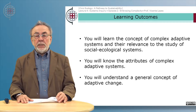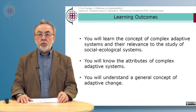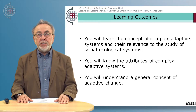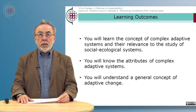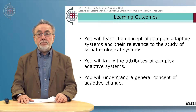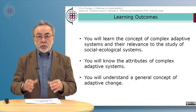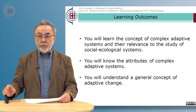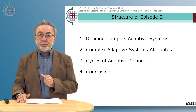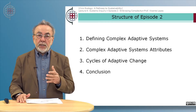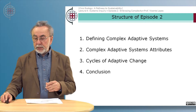In episode two we will cover the concept of complex adaptive systems and their relevance to the study of social ecological systems — social systems of human nature as defined in episode one. We'll take a brief look at the attributes of complex adaptive systems, then conclude with a description of a general concept of adaptive change. So: first we define complex adaptive systems, second we look at their attributes, then cycles of adaptive change, and finally our conclusions.